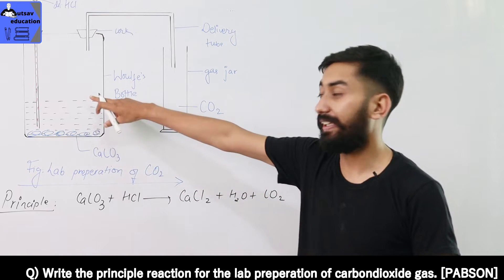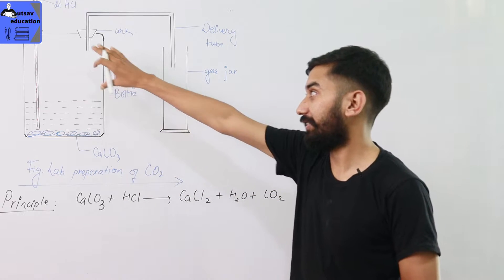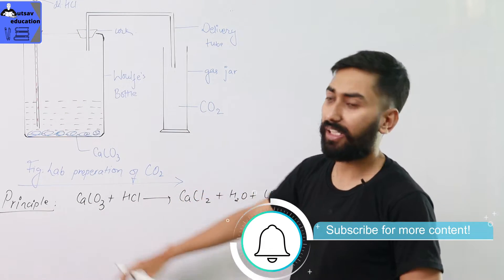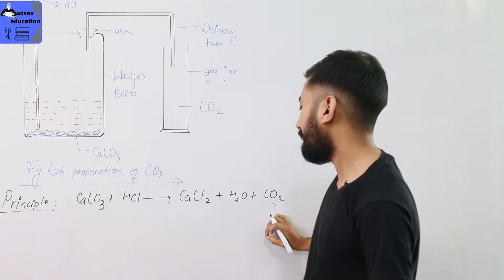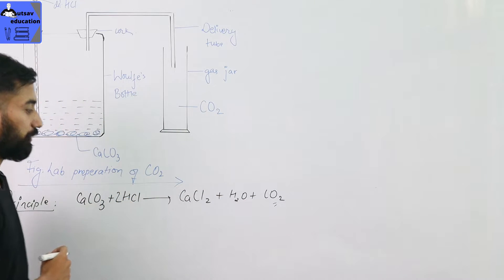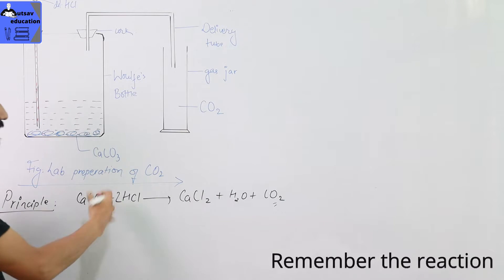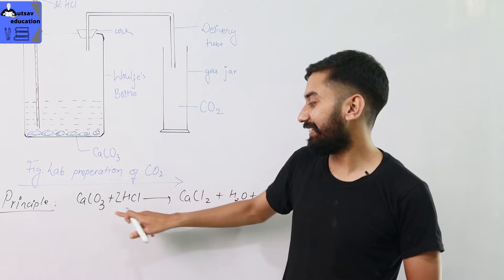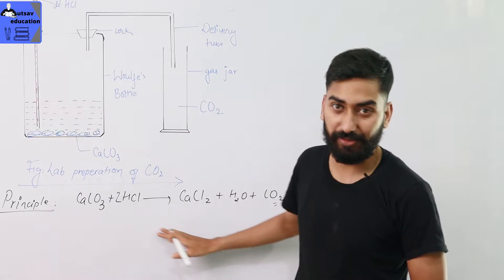Dilute HCl — dilute hydrochloric acid — is poured into the thistle funnel. Dilute HCl is poured into the Woulff bottle with the help of the thistle funnel, which contains marble chips or calcium carbonate. Calcium carbonate reacts with dilute HCl and gives carbon dioxide. You can write this reaction, you can explain it, you can read it.